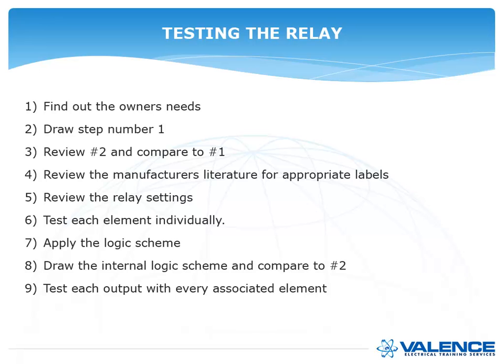If output 102 is supposed to close, it better be connected to the close circuit. Test each output with every associated element. If the relay is programmed so that an inverse time overcurrent operates outputs 1, 4, and 7, you should do a timing test monitoring output 1, then another monitoring output 4, then another monitoring output 7. If you have a modern relay, you can do that all in one test. It's very important that you test all the elements that are turned on, otherwise you might have a relay doing its job internally but programmed incorrectly and not actually closing outputs connected to anything in the real world.